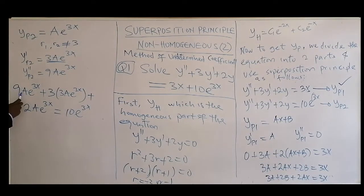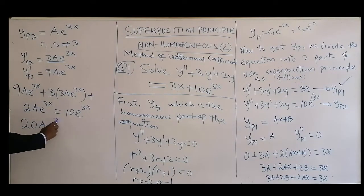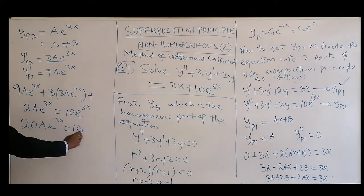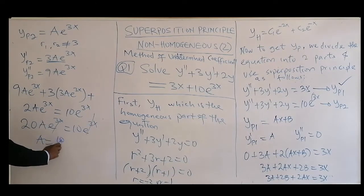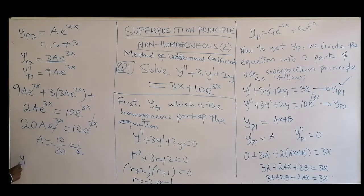So this will be 9 plus 9 plus 2, altogether 20Ae^(3x) equal to 10e^(3x). So e^(3x) can go, then A is 10/20, that's 1/2. So in that case, now YP2...